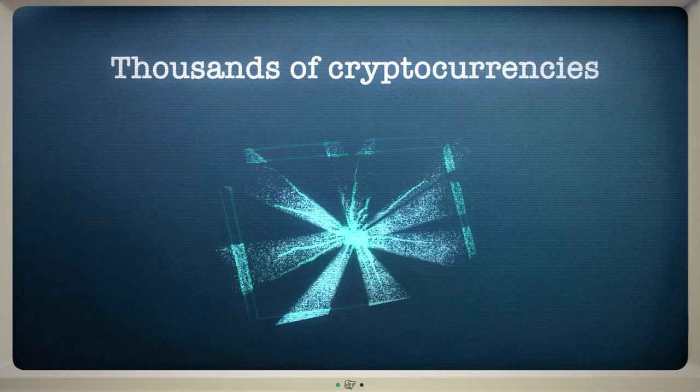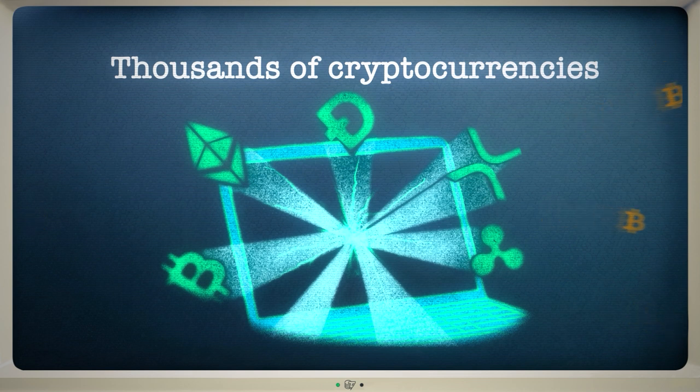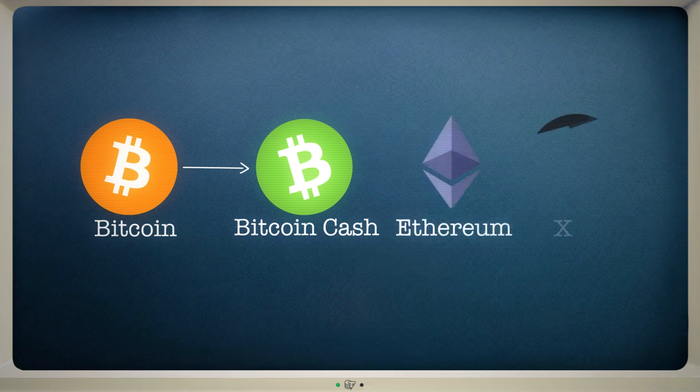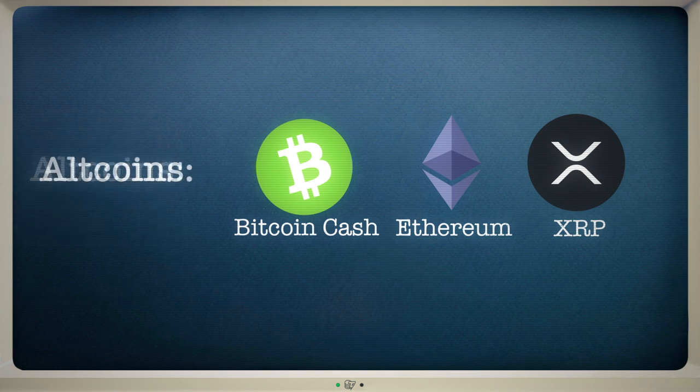Thousands of cryptocurrencies now exist. Some of them are directly related to Bitcoin, like Bitcoin Cash. Others have been built from scratch, including Ether and XRP. And cryptocurrencies that aren't Bitcoin are known as altcoins.